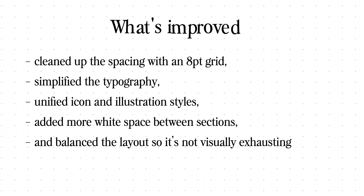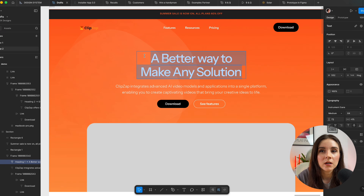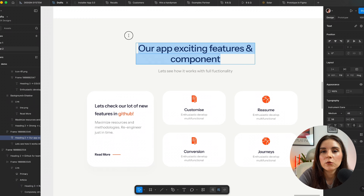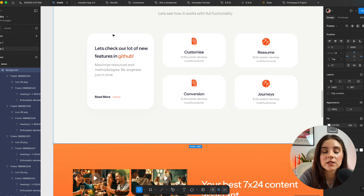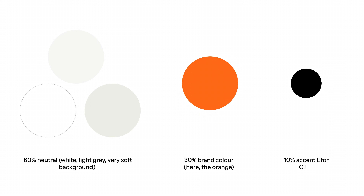Even though it looks much better, it's still missing the things that make a premium website. Strong messaging — the copy is generic, saying 'a better way to make any solution,' which means absolutely nothing. Right now there's a mix of different colors, which isn't ideal for a SaaS website. A simple color guide is 60-30-10: 60% neutral (white, light gray, very soft background), 30% brand color (here, the orange), and 10% for accents. If you're only starting out in web design, the 60-30-10 rule is your safe bet.